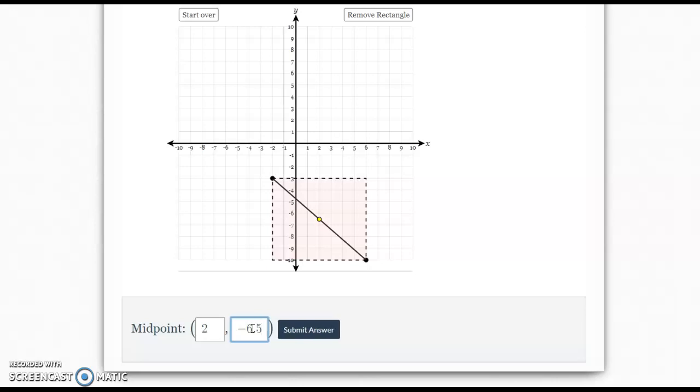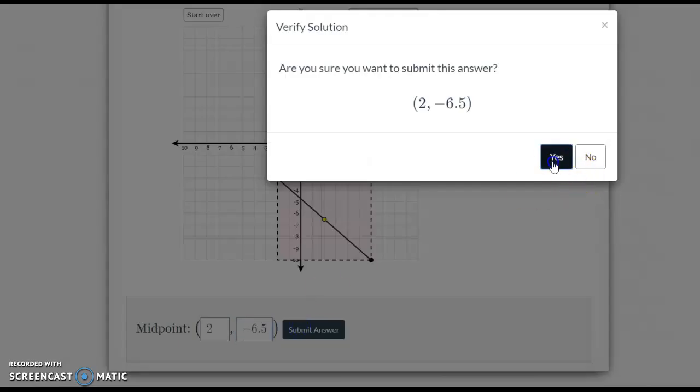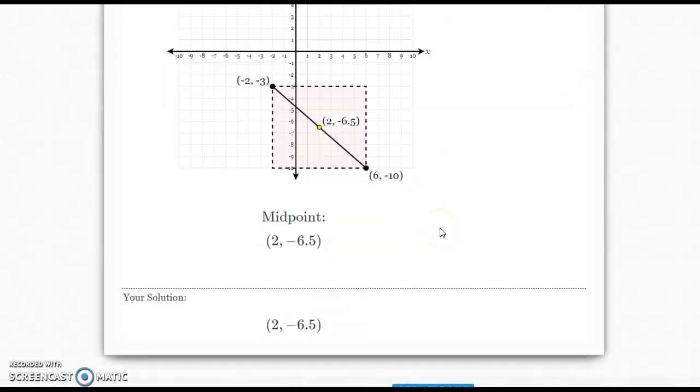Be careful with those negatives because sometimes you might want to think it's -7.5, but it's in between negative 6 and negative 7. Again, how did I do that? Well, if this whole side is 8, halfway of 8 is 4 units, so I moved 4 units from either side. And if the height is 7, what is half of 7? 3.5. So I went down 3.5, or it could have gone up 3.5. Let's see if we did this right. And we did. Good job.